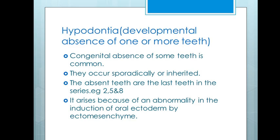Hypodontia is a developmental absence of one or more teeth — a congenital absence that is very common. It can occur sporadically or be inherited. Importantly, the absent teeth are always the last teeth in their series: for example, tooth 2 (lateral incisor), tooth 5 (second premolar), and tooth 8 (third molar) are the last in their respective series.